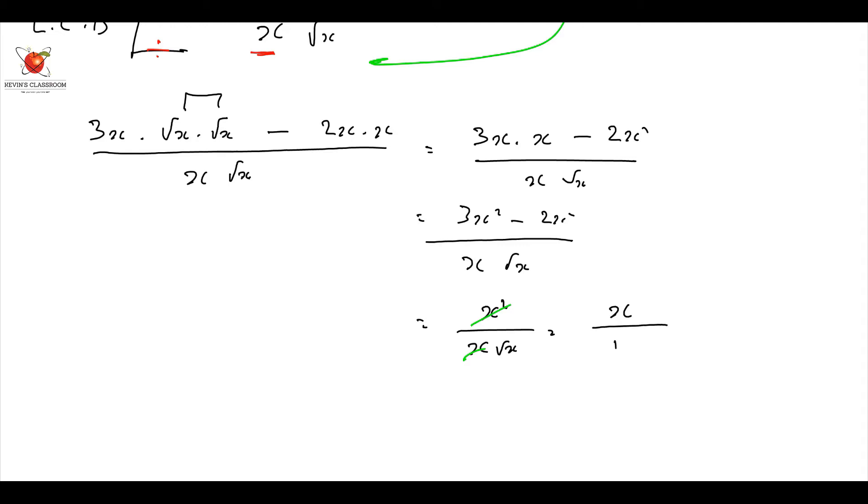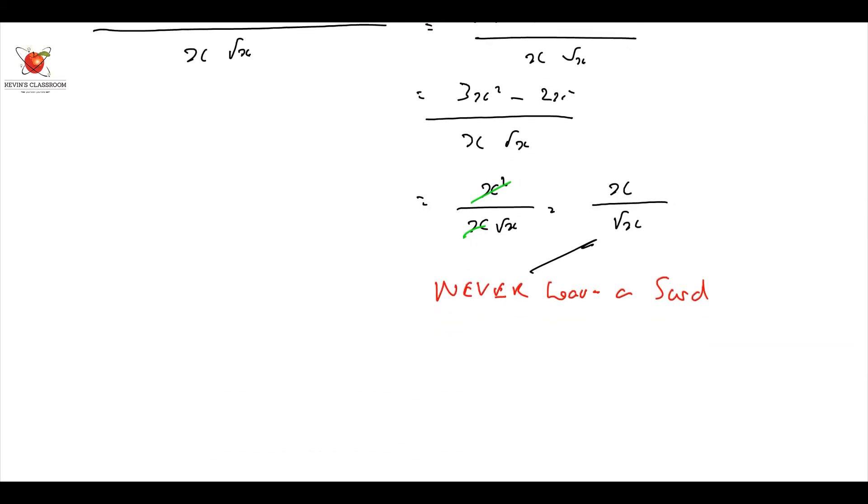But we never leave a surd or a root in the bottom. What process do we do? We rationalize, rationalize the denominator. How? Some people call it the magic 1. I just say you just multiply it through by root x over root x, whatever that is.